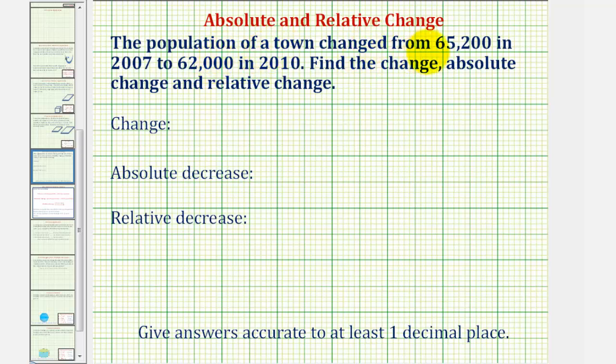The population of a town changed from 65,200 in 2007 to 62,000 in 2010. We want to find the change, absolute change, and relative change.